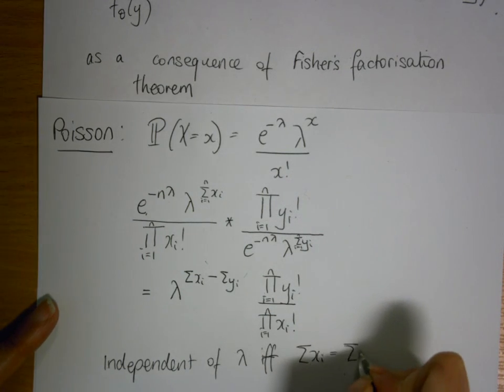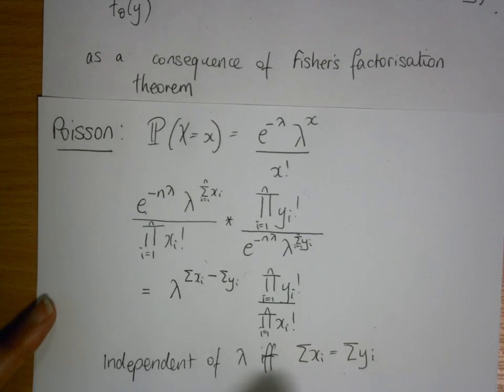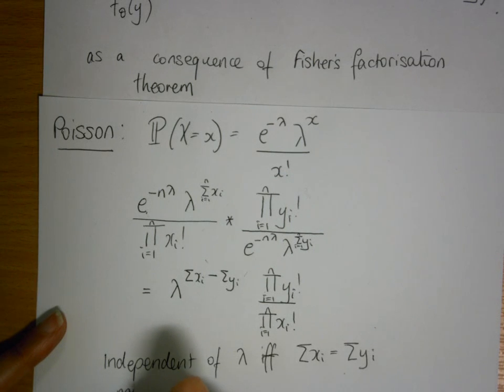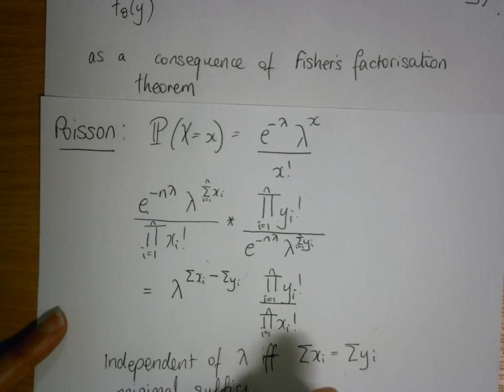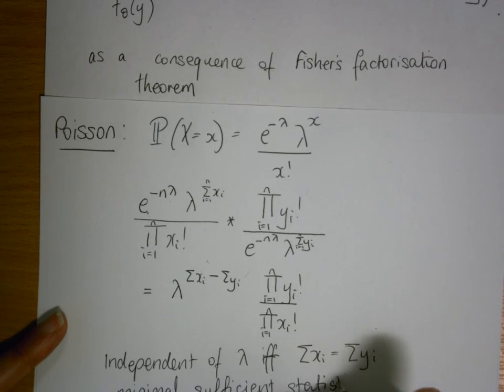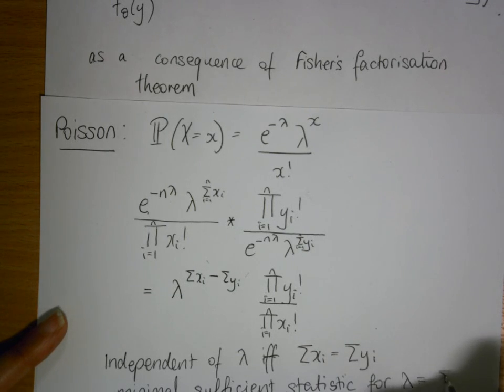So we have independent of lambda if and only if the sum of xi is equal to the sum of yi. So our minimal sufficient statistic for lambda equals the sum of your data.